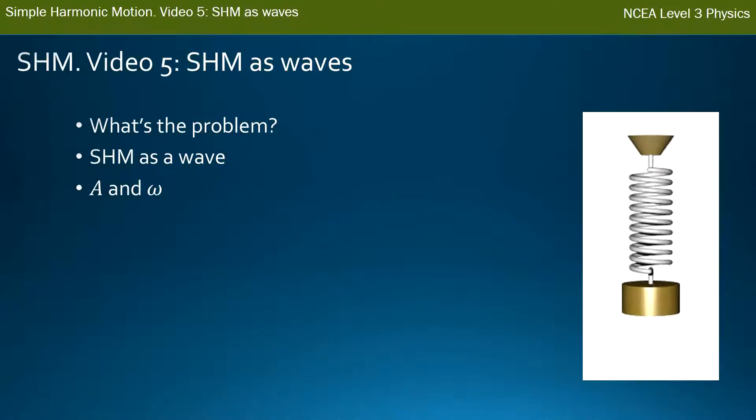First of all, we're going to talk about what the problem is with simple harmonic motion, and then why we deal with it as a wave. Then two important properties are going to help us with calculations: amplitude and omega.